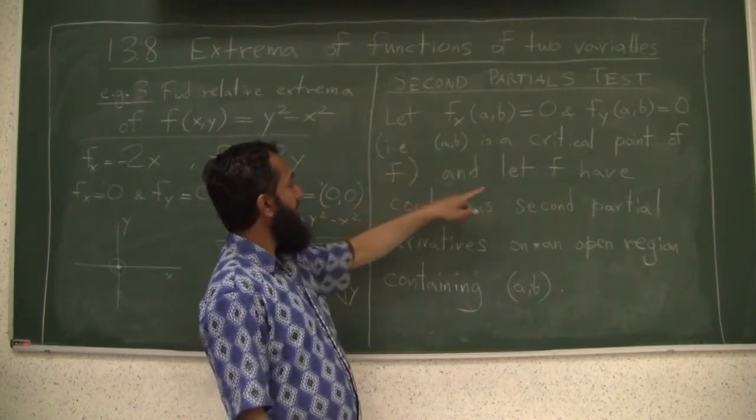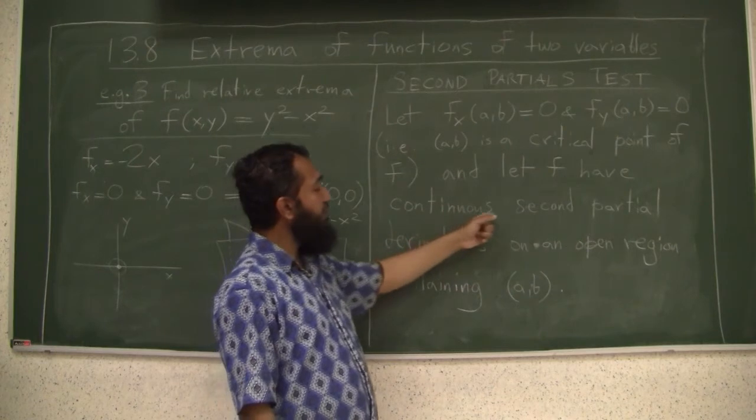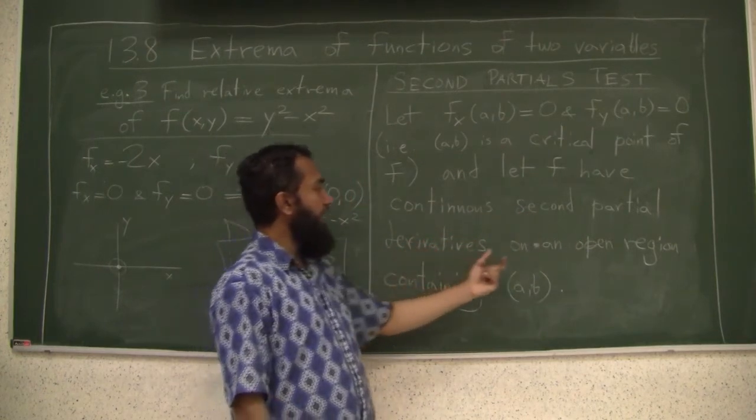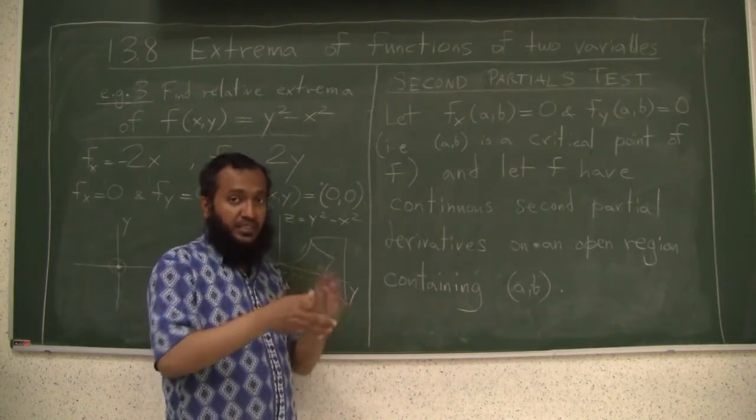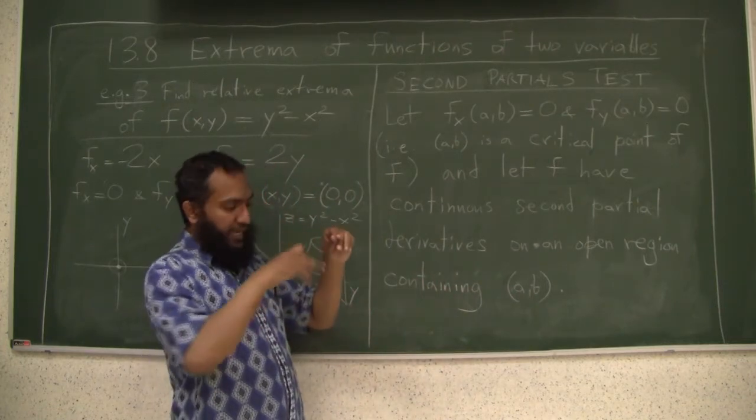a, b is a critical point of f. And let f have continuous second partial derivatives on an open region containing (a,b). Like on a little open region containing a, b, all of our second partial derivatives, which is f_xx, f_yx,